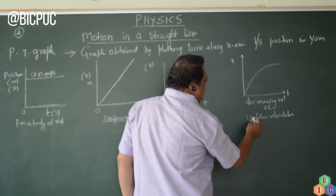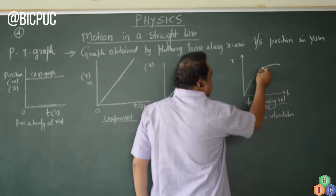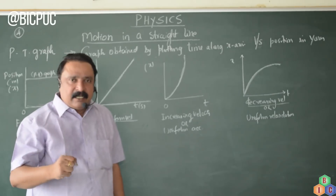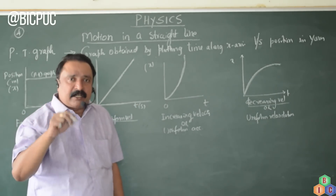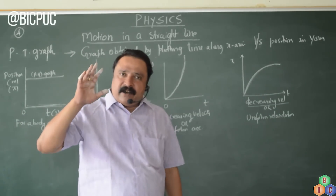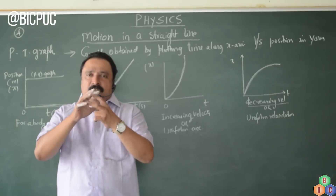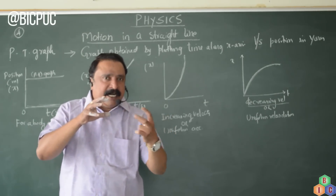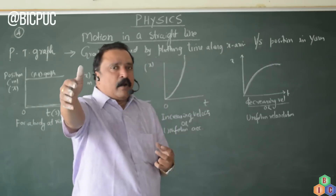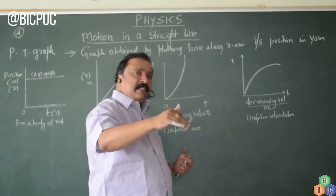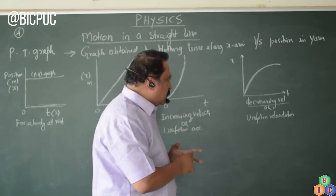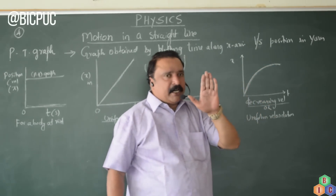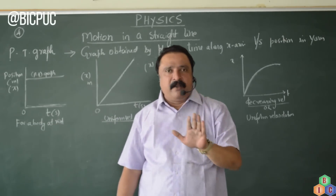Now if a body is moving with decreasing velocity, this is the shape of the PT graph. Whenever the velocity of a body decreases, the body will have an acceleration called retardation — negative acceleration. For example, if a driver applies the brake, the velocity of the car keeps decreasing with respect to time. The car is not under acceleration; it is under retardation because in the next few seconds it is going to stop. The effect of retardation is to slow down the velocity, and finally after some time the body may come to rest. The body is moving with uniform retardation, meaning the driver is applying a constant brake.